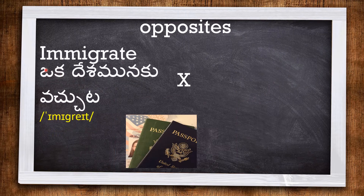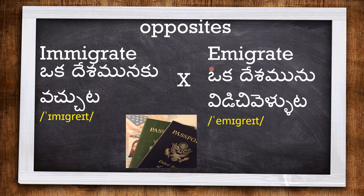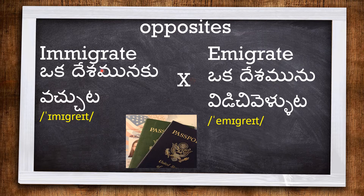Now, IMMIGRATE and EMIGRATE — these two look very similar but they are opposites. Here, 'I' means 'in', so immigrate means coming into a country. 'E' means exit, that is leaving a country. So immigrate and emigrate are opposites. A passport is needed for both these activities.